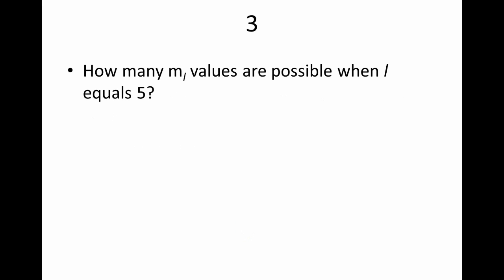Number three asks: how many M sub L values are possible when L equals five? If we draw the diagram, we go L spaces to the left and L spaces to the right with a zero in the middle, so the number of M sub L values is two L plus one. Plugging in five, we get eleven.